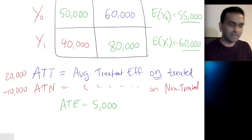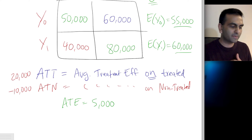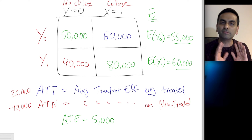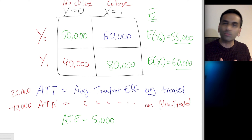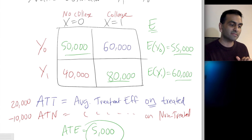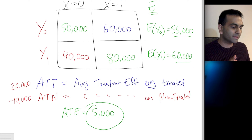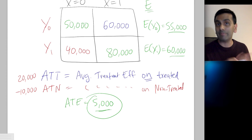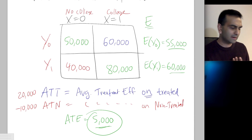You wouldn't actually be able to do this exercise in the real world because you wouldn't have data that good. This is just a thought experiment to establish vocabulary and show how researchers reason through these things — to show that the actual causal impact, the ATE, might be vastly different from the naive estimator of $30,000. If these numbers were hypothetically true, going to college increases income on average by only $5,000, not $30,000 — and for a certain group, going to college would actually reduce their income.